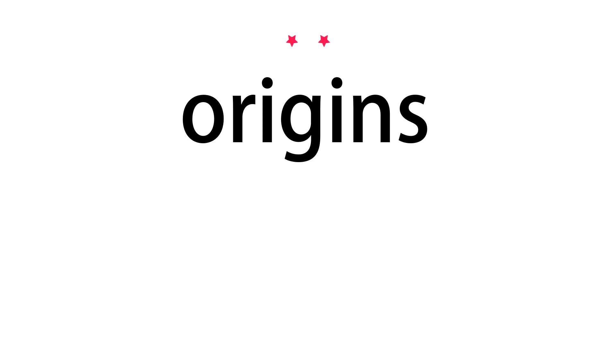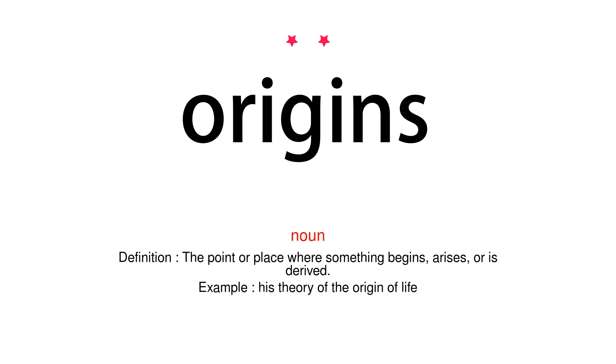Origins. Noun. Definition: The point or place where something begins, arises, or is derived. Example: His theory of the origin of life.